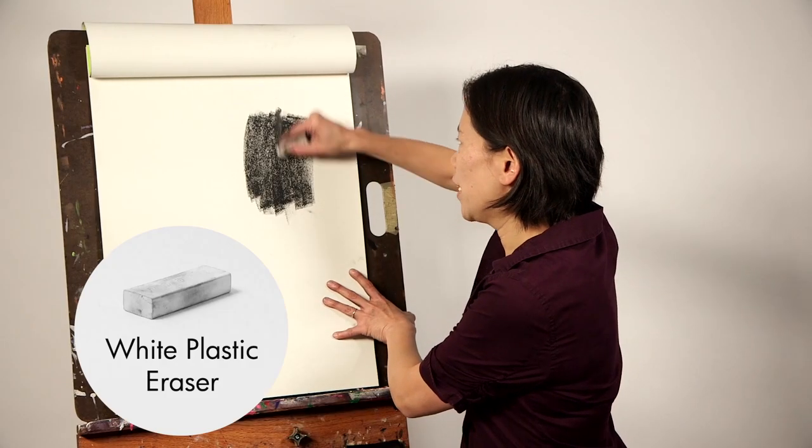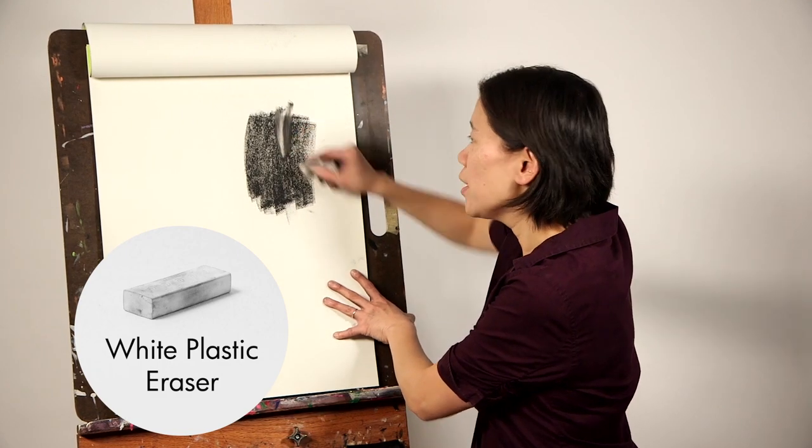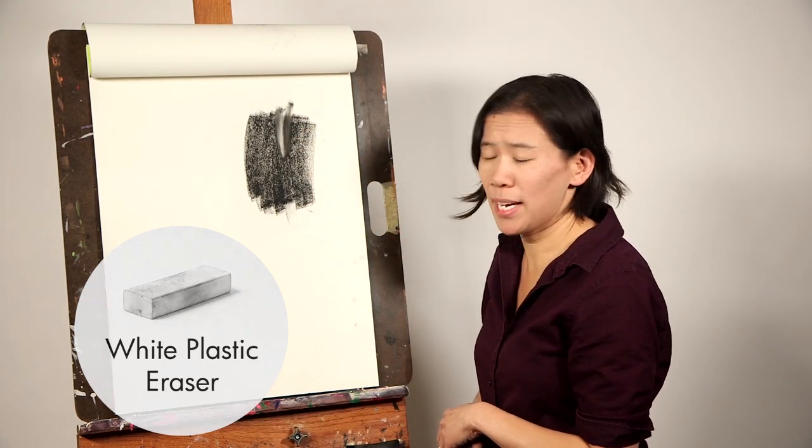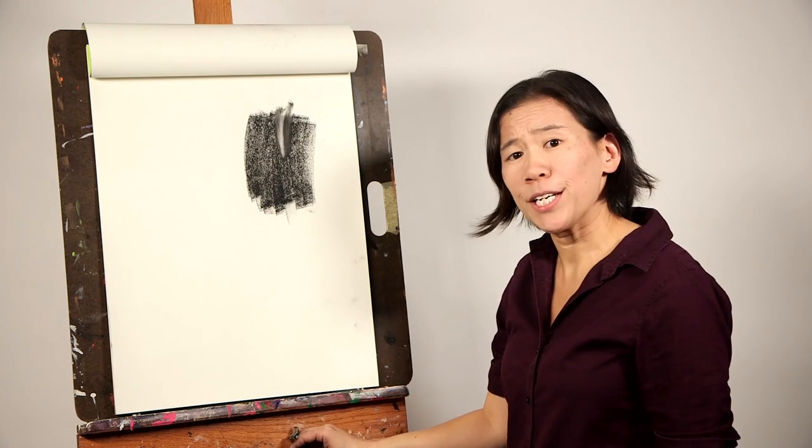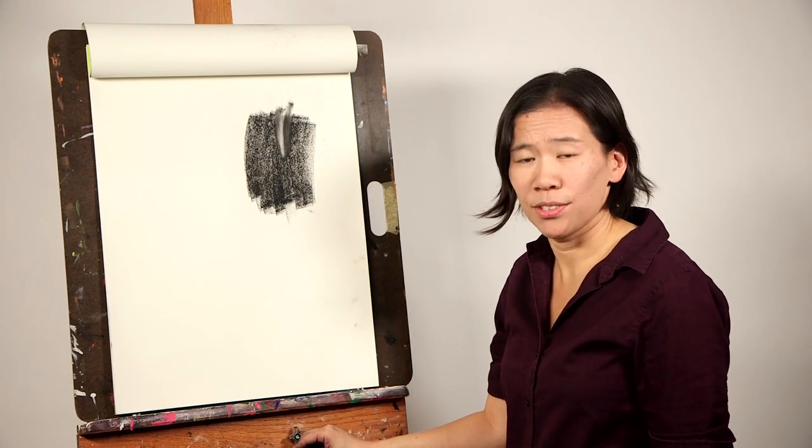You can definitely take an eraser and lighten areas of compressed charcoal, but you'll never get back to that white of the page. A lot of people are afraid to use compressed charcoal for this reason. So the trick is,